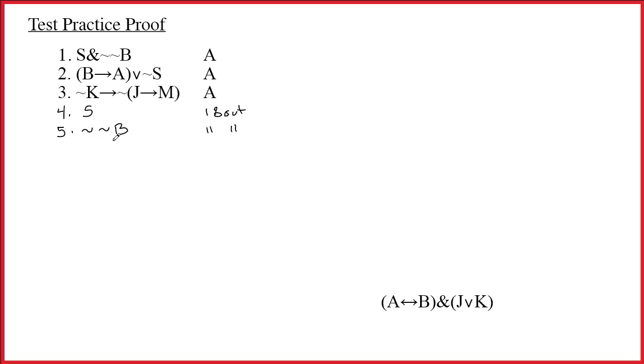When you see tilde tilde in front of a single letter, you're always welcome to use double negation and drop those tildes, but I'm usually not in a great hurry to drop two tildes off a single letter. I will check off line 1. Now my attention goes to line 2, and I see that it's a wedge. Well, for a wedge, we're supposed to think about disjunctive argument and wedge out. Always think about DA first, because it's one of the easiest and most intuitive rules that we have.